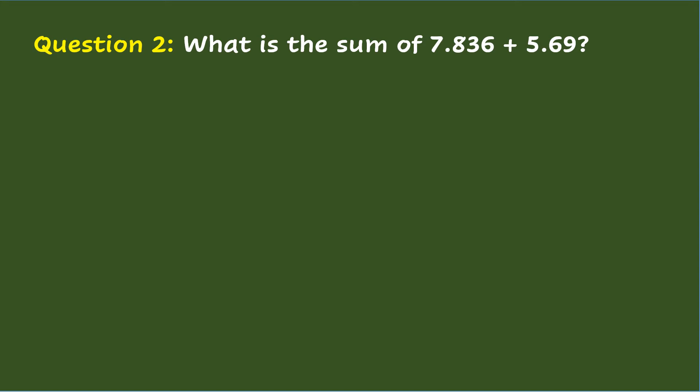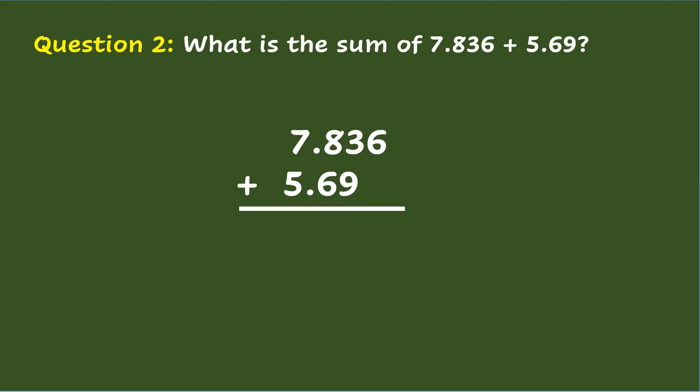Question 2: What is the sum of seven and eight hundred thirty-six thousandths plus five and sixty-nine hundredths? To get the sum of mixed decimals, write the decimals vertically. Make sure to align the mixed decimals based on the place value as well as the decimal points. Add zero to fill in the vacant place value in five and sixty-nine hundredths. Then add from right to left, just like in whole numbers. Beginning with the thousandths place: six plus zero is six.